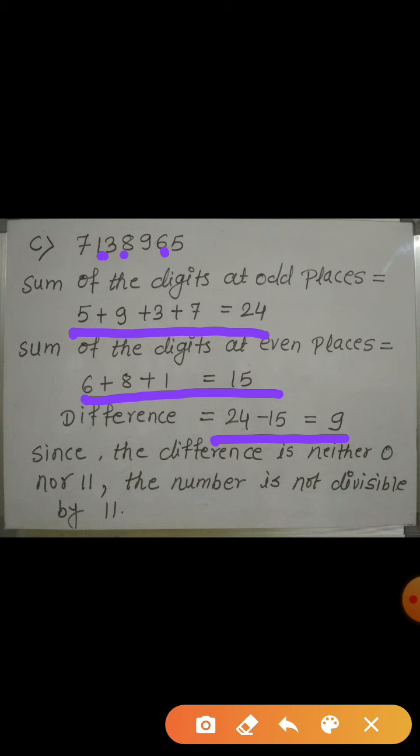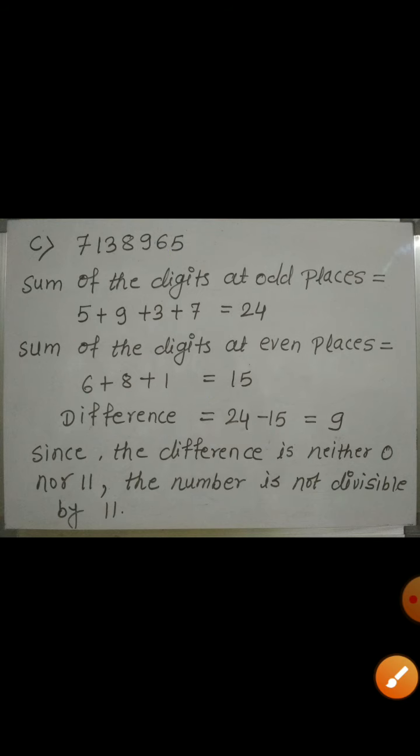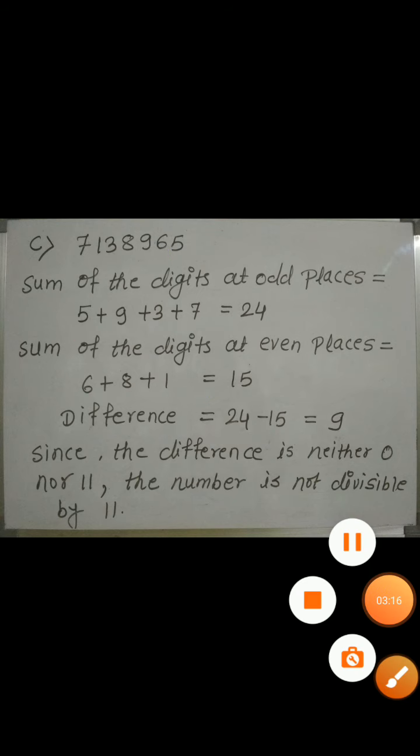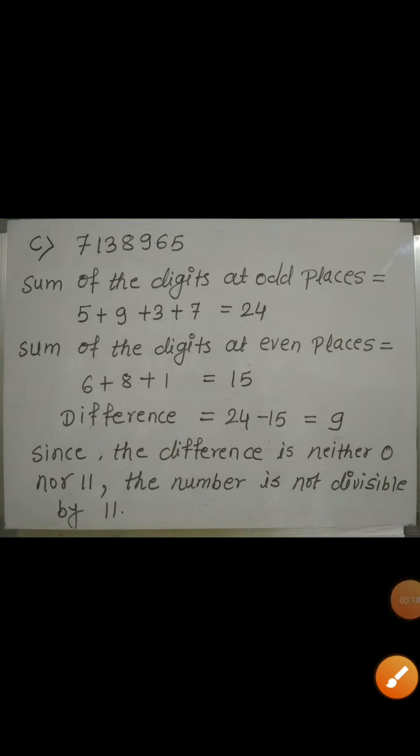hence the number 7138965 is not divisible by 11. Likewise, you can solve the remaining examples given in your textbook.